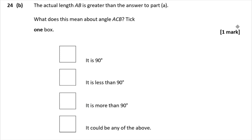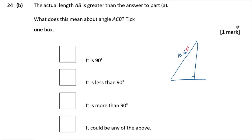Part B: The actual length of AB is greater than the answer to Part A. What does this mean about angle ACB? If AB gets longer while the other two sides stay the same, that angle at C must widen out. So angle ACB must be greater than 90°.